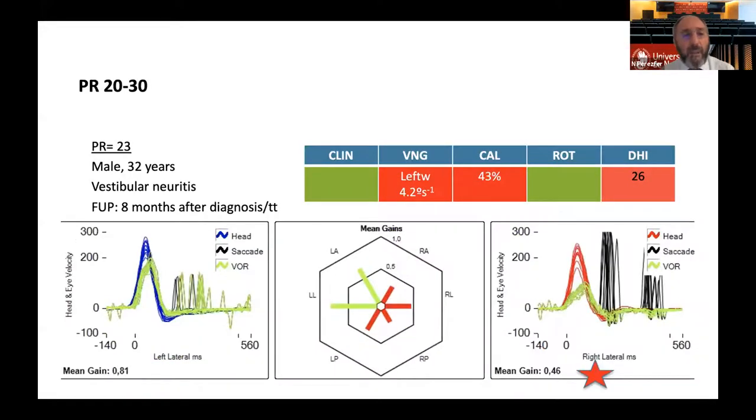This is a patient, male, 32 years, with a right side vestibular neuritis. He's coming eight months after diagnosis and treatment. He's doing well. There's a left-ward nystagmus, a little bit easily seen. The caloric test is 40% hypofunction. Rotatory chair is normal. DHI is quite the border, 26. And now you can see there are typical cover-overt saccades and a second group of saccades. These are gathered saccades in two times. And this gave us a PR index of 23.